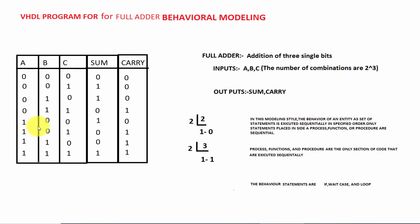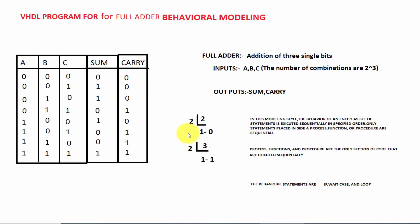For 1 0 0, here only 1 is there, so sum is 1 and carry is 0. Next, for 1 plus 0 plus 1: 1 plus 0 is 1, and 1 plus 1 is 2. The binary value of 2 is 1 0, so sum is 0 and carry is 1.